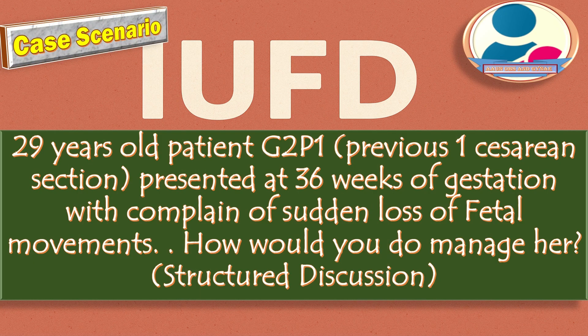A 29-year-old patient, gravida 2 para 1, with a previous cesarean section, presented at 36 weeks of gestation with a complaint of sudden loss of fetal movement. How would you manage her?